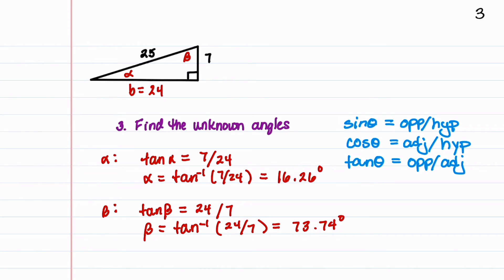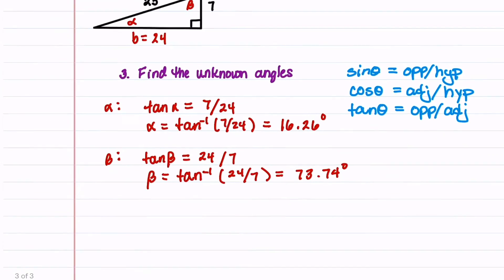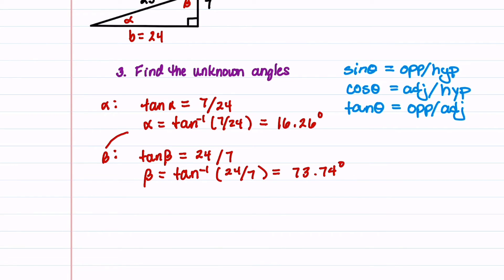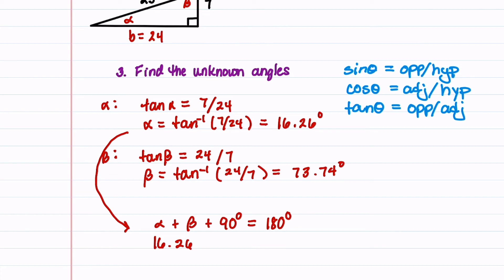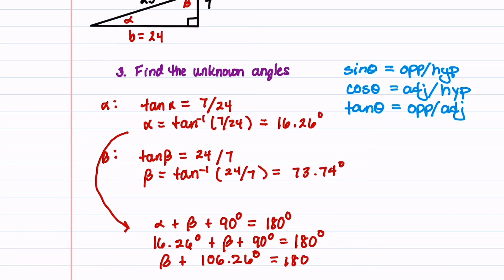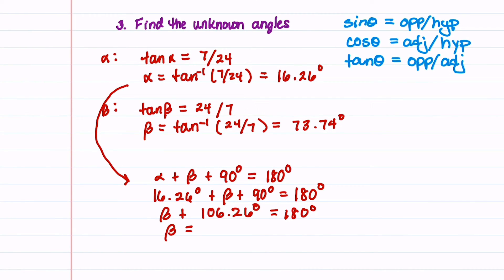Before we end, here's an alternate way to find beta: after finding alpha, we can use the angle sum property — alpha plus beta plus 90 degrees equals 180 degrees. Plugging in 16.26 degrees plus beta plus 90 degrees equals 180 degrees, then subtracting 106.26 degrees from 180 degrees gives us 73.74 degrees.